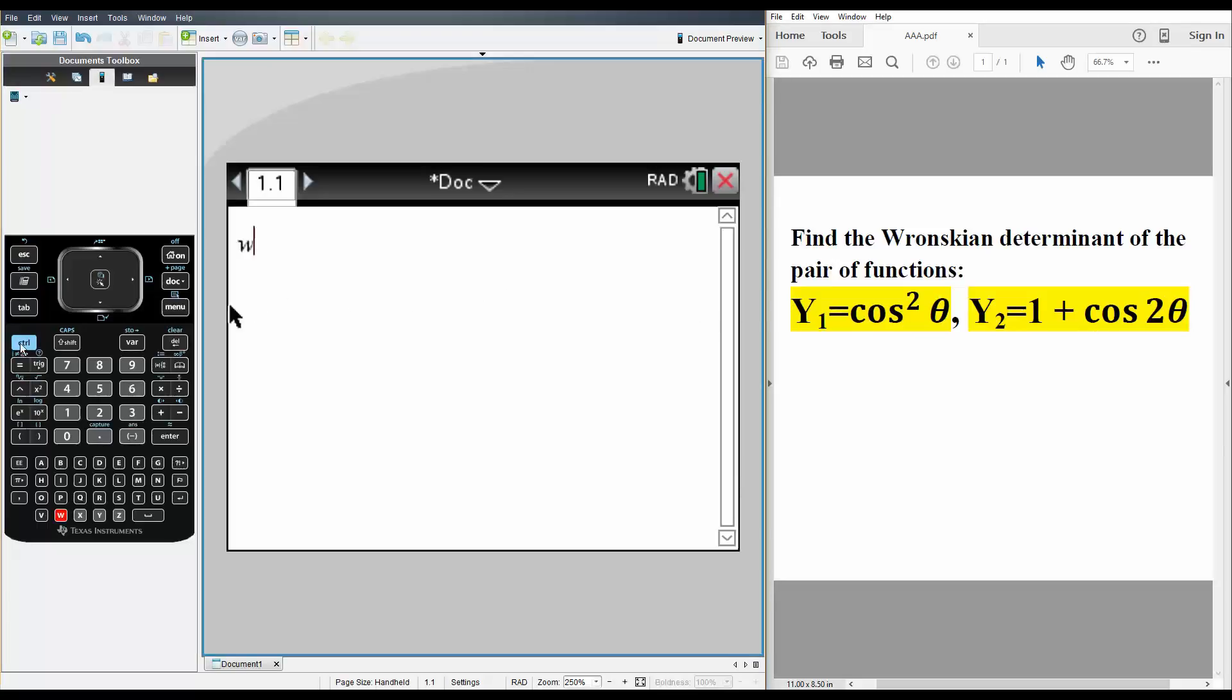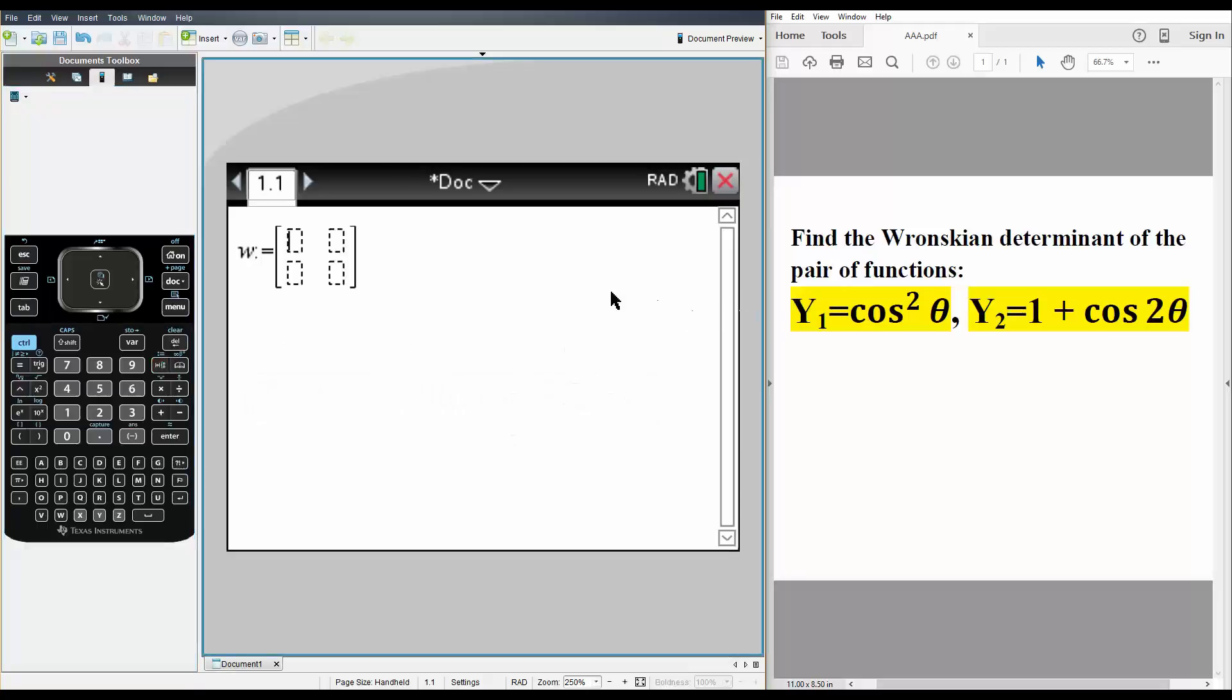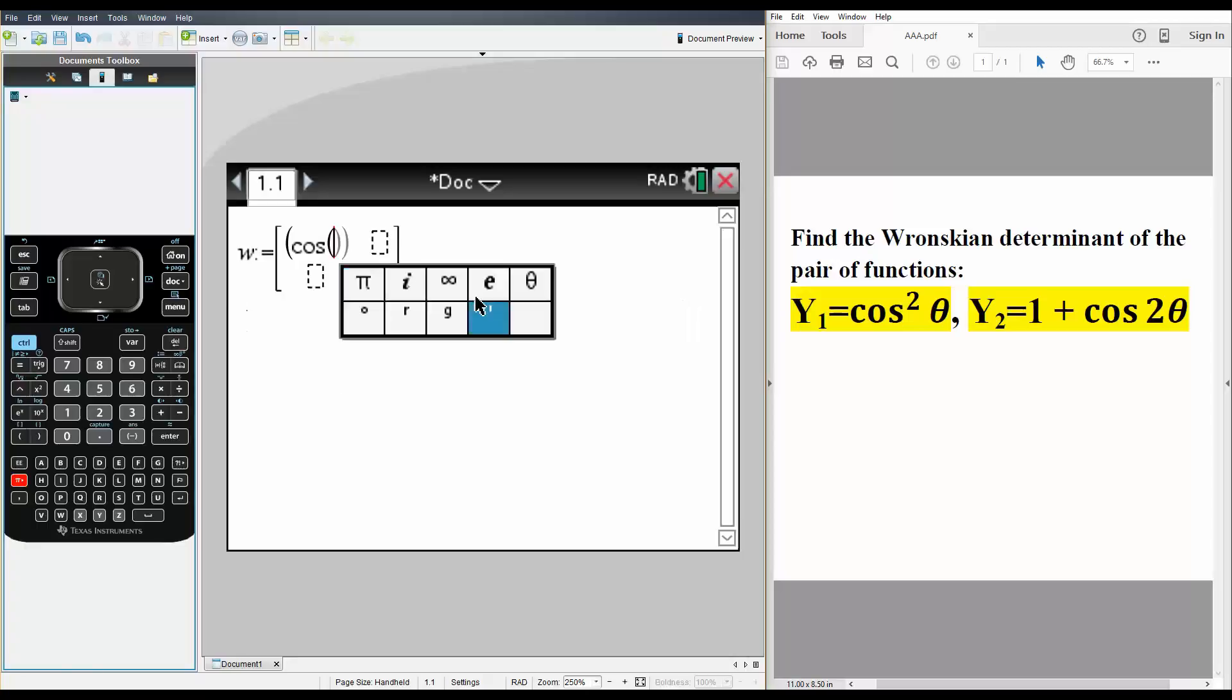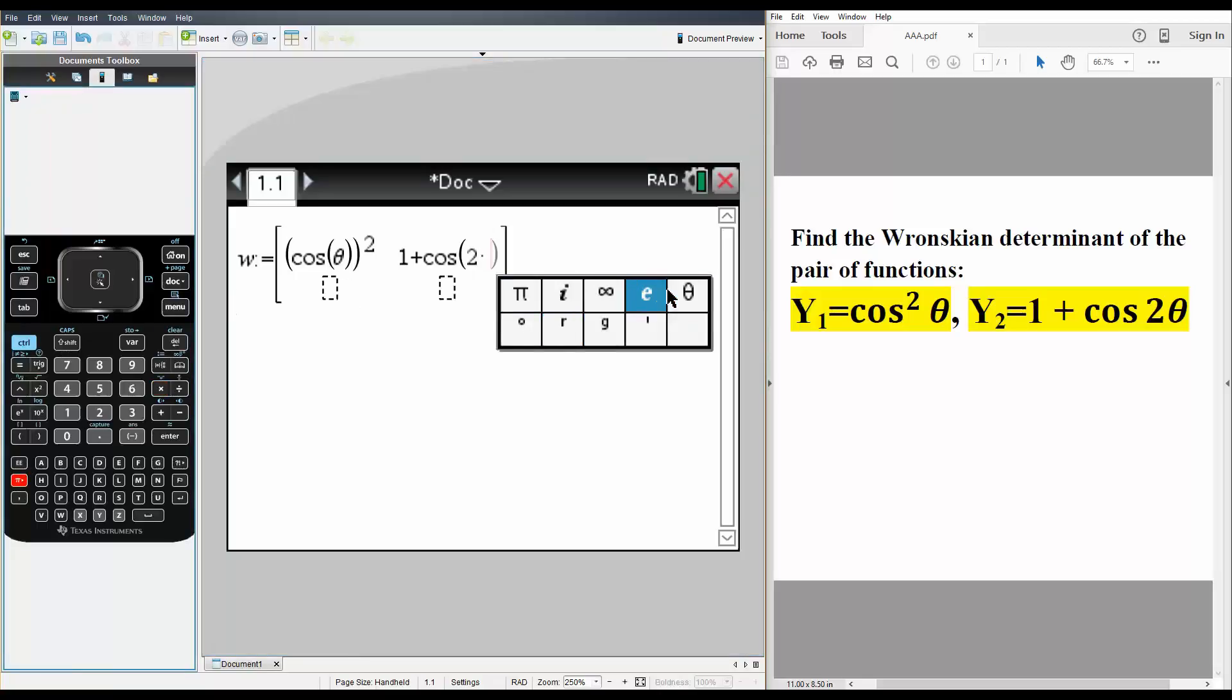We define W as a 2 by 2 matrix. On the first line, we enter cosine squared theta - parentheses, trig, cosine, pi sign to theta, and we want it squared. This is equivalent to cosine squared theta. On the next line, we have 1 plus cosine, so trig, cosine, 2 times theta, pi, then theta.